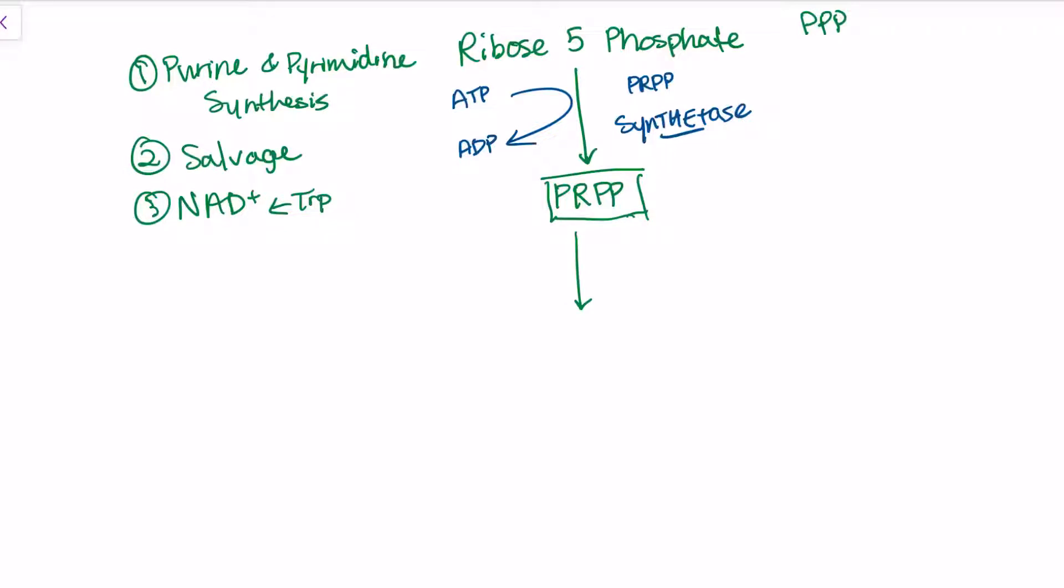From PRPP, we go to 5-phosphoribosyl-1-amine using glutamine-phosphoribosyl-amidotransferase. It's called this because it describes exactly what it's doing. We take glutamine, strip the amine group off, and plug it onto PRPP. Additionally, we hydrolyze and take off two phosphate groups. We've stripped phosphates from PRPP and added an amine group, hence amidotransferase because we're transferring an amine group.